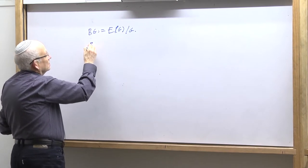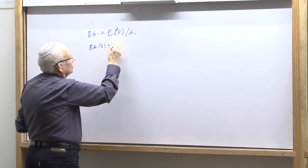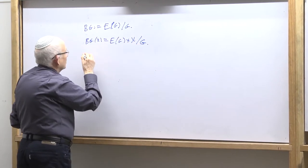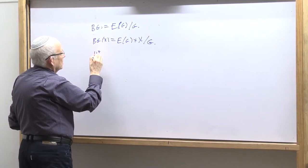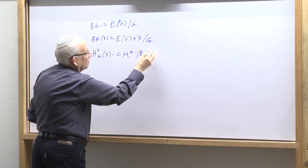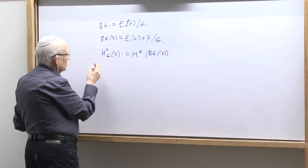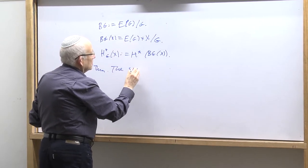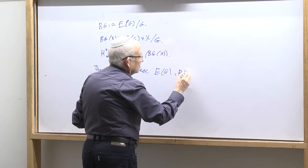And for instance, in my notation — it's not standard notation — BG(X) is equal to EG cross X. And by definition, cohomology of X — by definition — is cohomology of the space BG(X).